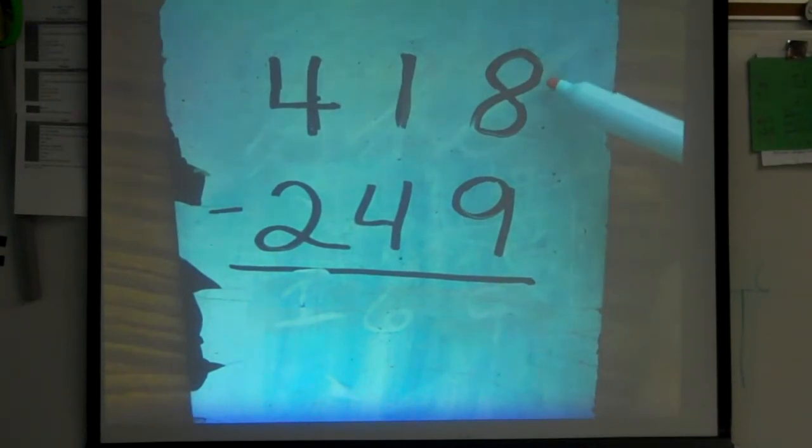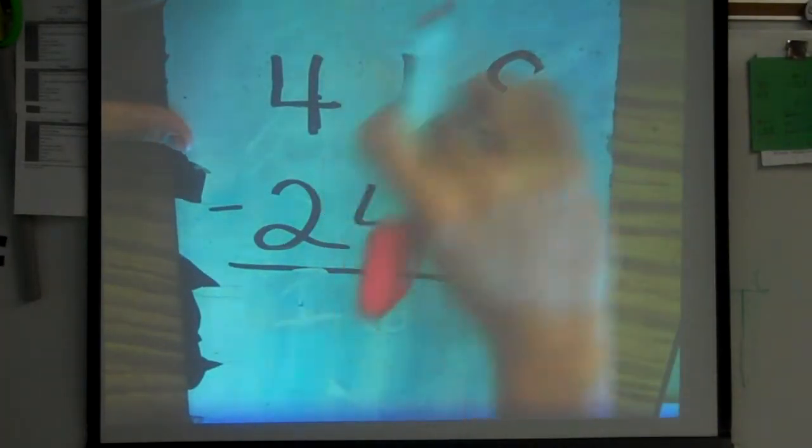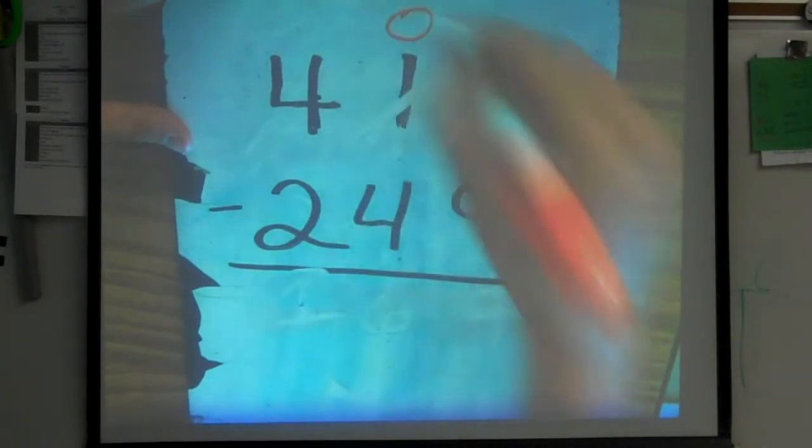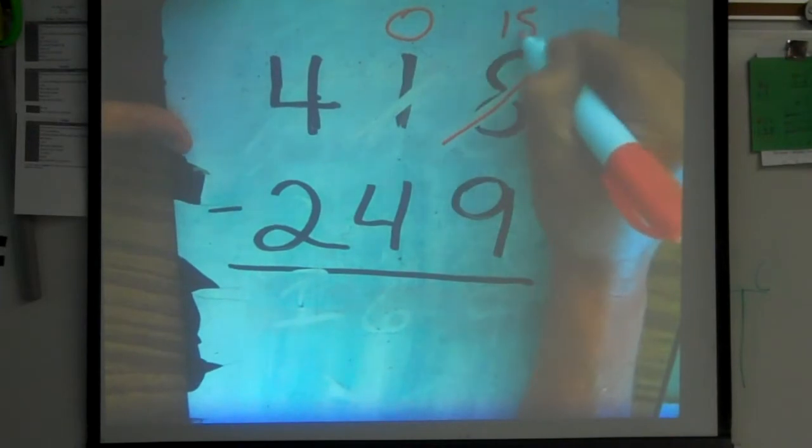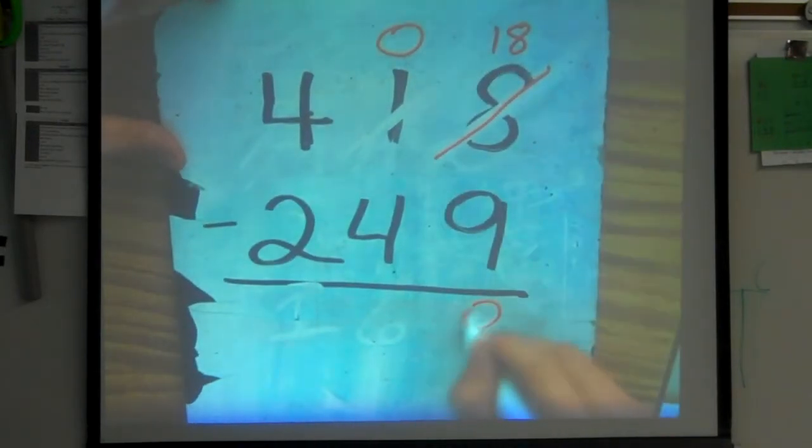So we begin in our ones column, 8 minus 9. The big number is not on top, so I go over to the tens column, and I borrow once, that turns to 0, and this 8 turns into 18. Now the big number is on top, 18 subtract 9 gives me a difference of 9.